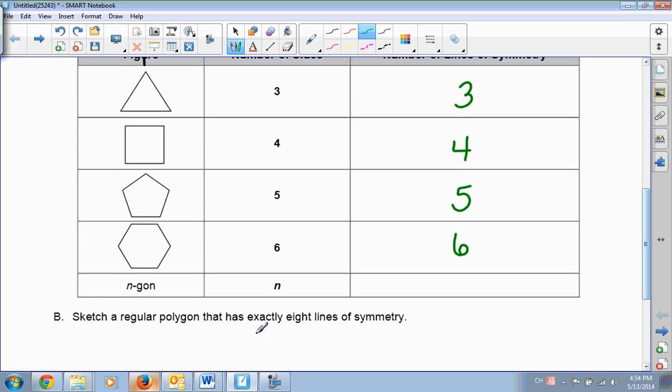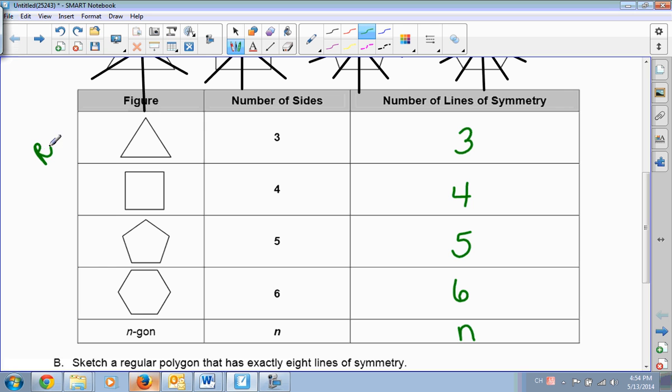So basically, the pattern is, however many sides there are, is however many lines of symmetry it has. The trick here is that it has to be a regular polygon, which just means that all the sides have to be the same length. If they're not the same length, then this rule does not apply.